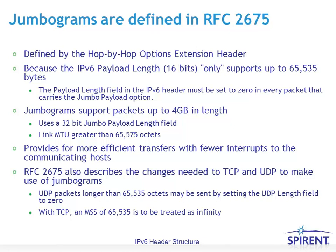There are also changes needed to support jumbograms with TCP and UDP. UDP packets longer than 65,000 bytes may be sent by setting the UDP length field to 0, and with TCP an MSS of 65,000 bytes is treated as infinity.